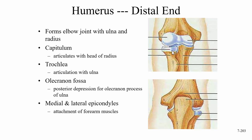The head of the radius allows rotation back and forth, as well as movement up and down for elbow bending. The trochlea — meaning pulley — is pulley-shaped and articulates with the ulna.